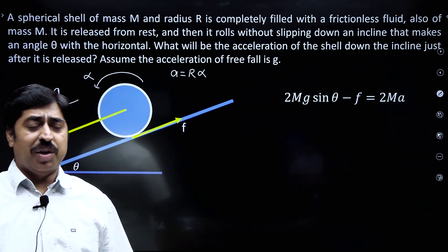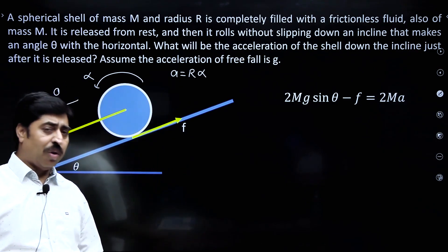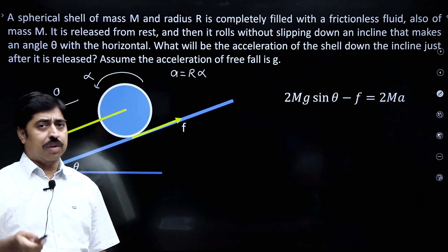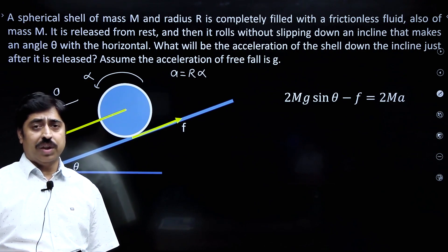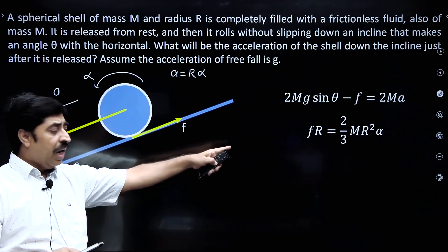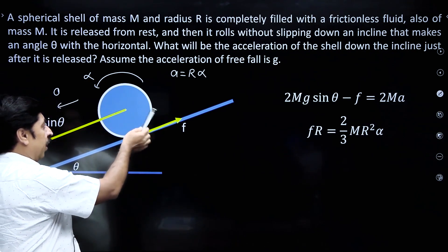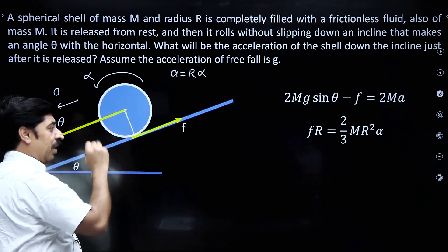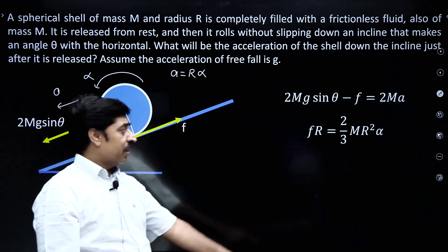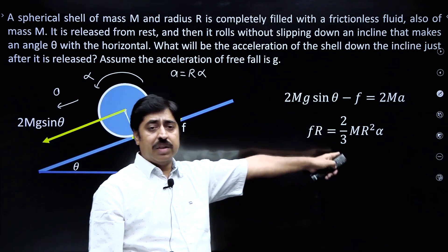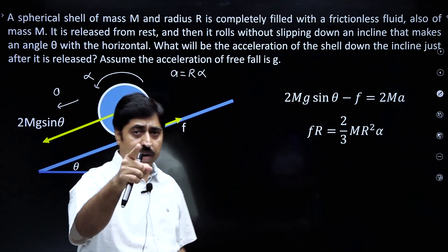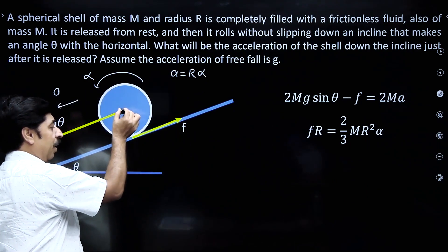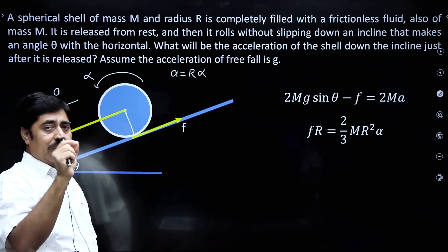I am writing the torque equation τ = Iα for the rotational motion of the shell about its own center of mass. F times R is the torque — friction times this radius is the torque of the friction force about the center of the shell — and this is equal to I times alpha.